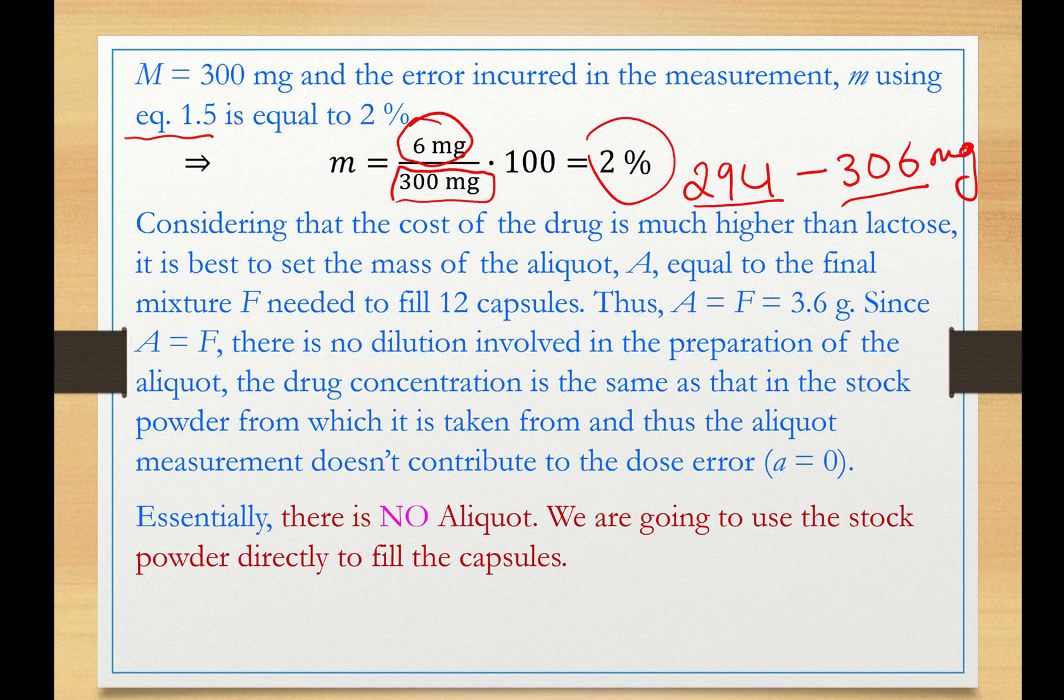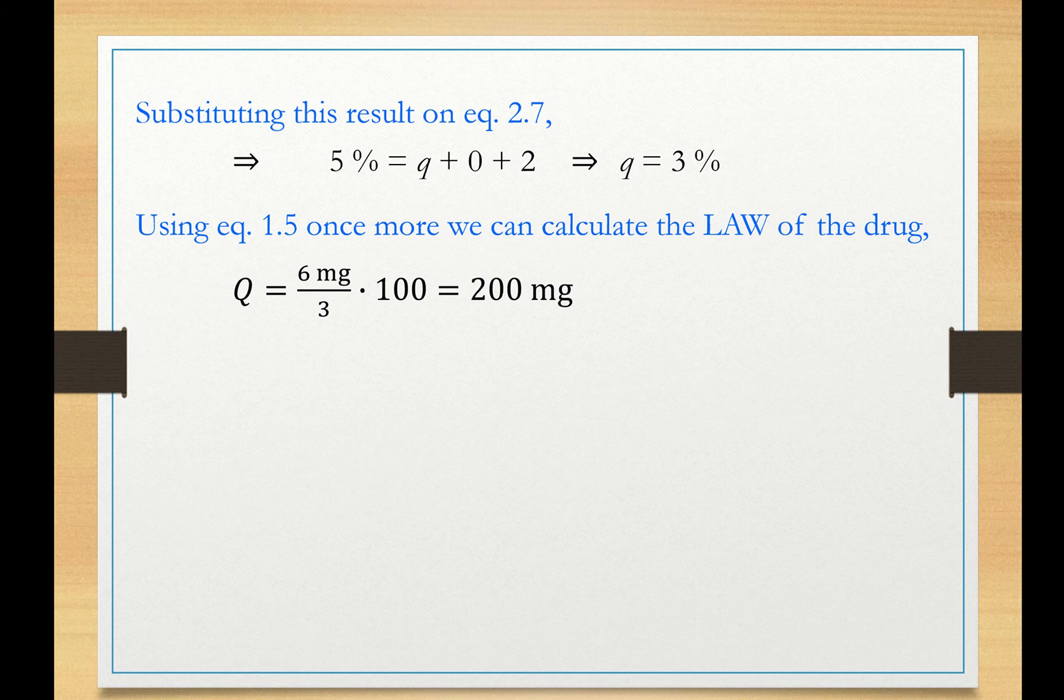Now, let's talk about the aliquot. In this case, actually, because I'm setting the aliquot to be equal to the powder needed to fill the prescription, I'm not physically measuring an aliquot. I don't have to do that. So I'm going to measure directly the powder and fill the capsules from the stock powder. So there is really essentially no aliquot. There is an aliquot that we need to use to carry out our calculations. But we're not physically preparing an aliquot. Therefore, since I don't have an aliquot, I'm not physically preparing an aliquot. That's 0.